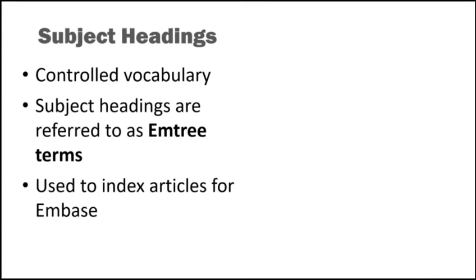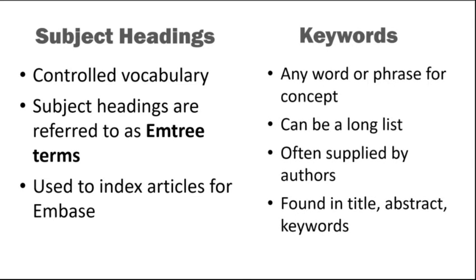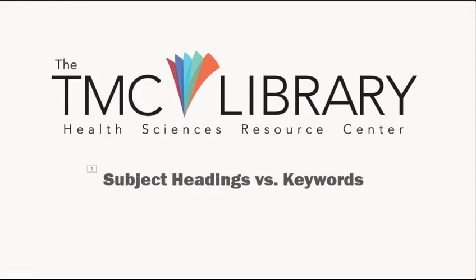Subject headings are words that constitute a controlled vocabulary used to index articles in Embase. In Medline, subject headings are called MeSH, or Medical Subject Headings. In Embase, subject headings are referred to as mTree terms. Keywords, on the other hand, are any words or phrases used to describe a particular concept. Unlike subject headings, the list of possible keywords can be quite long. Keywords are often supplied by authors and can be found in titles, abstracts, and keyword fields. Both subject headings and keywords are essential to conduct a thorough search.